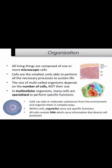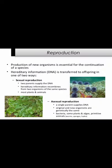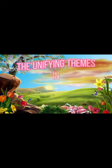Reproduction: production of new organisms is essential for the continuation of a species. Hereditary information — DNA — is transferred to offspring in one of two ways. Sexual reproduction: two parents supply hereditary information that recombines from two organisms of the same species — most plants and animals. Asexual reproduction: a single parent supplies the original and new organisms are genetically the same — bacteria, some plants and algae, primitive animals, worms, sponges, hydra.